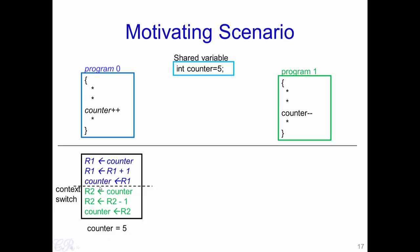After a context switch, the same thing happens for program 1. The value of counter (now 6) is loaded into R2. R2 is decremented by 1, so R2 becomes 5. Then R2 is stored back into counter. At the end of these two programs executing, the value of counter is 5. Now let us look at the two scenarios where we get the value of counter as 4 or as 6.